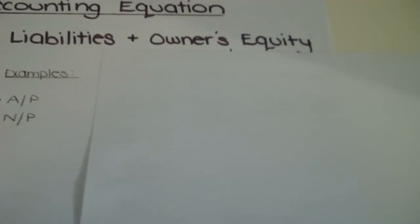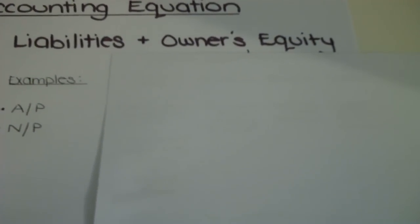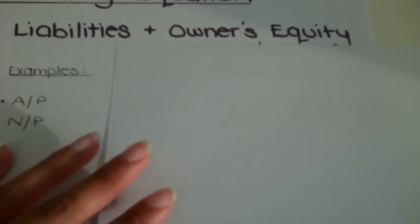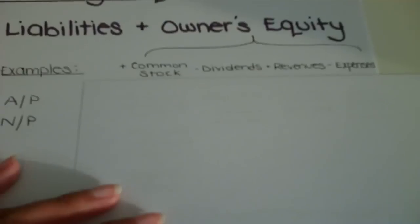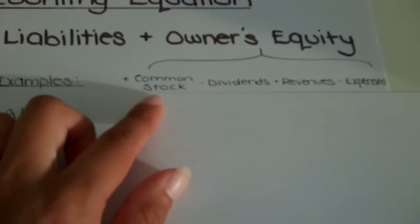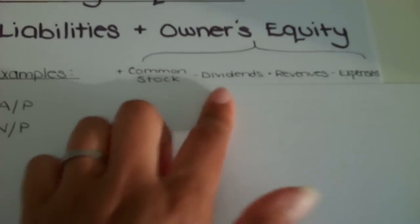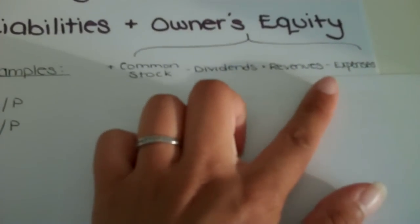Owner's equity. Well, before we can get to any examples, we have to expand the owner's equity section. Owner's equity is made up of four sub-categories: common stock, dividends, revenues, and expenses.